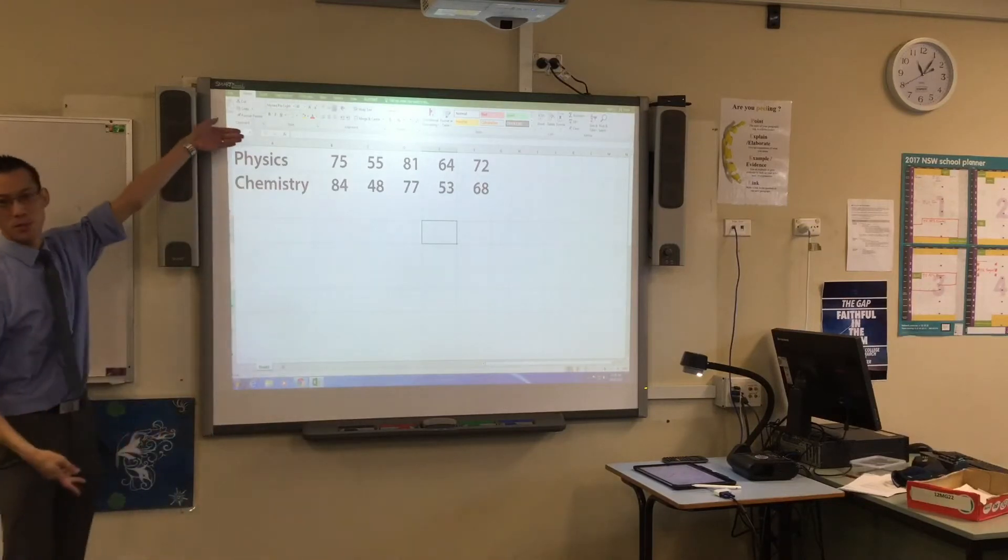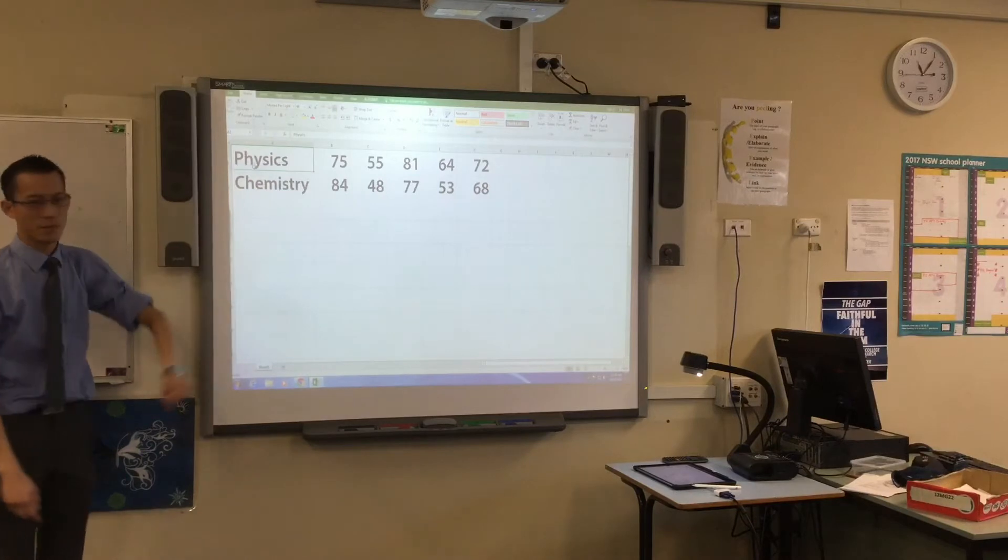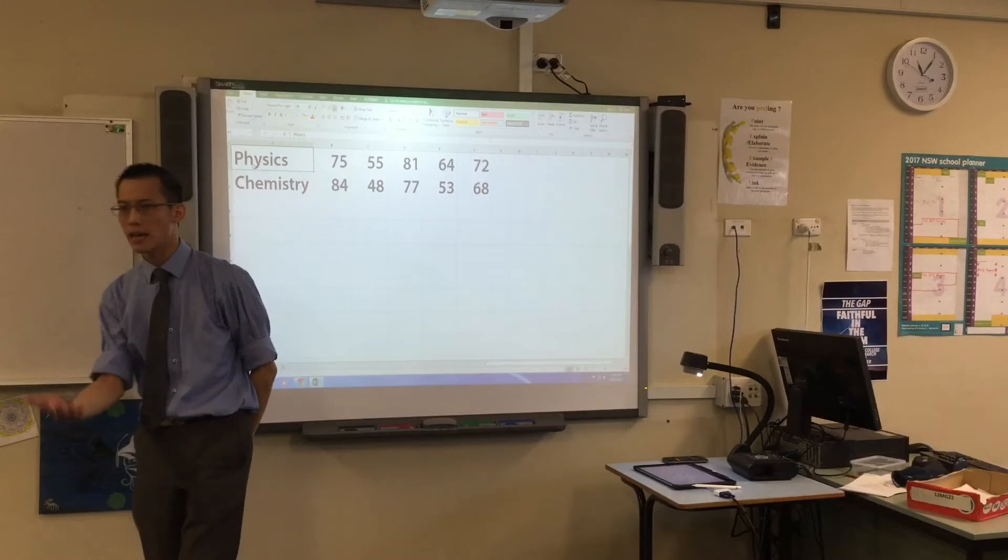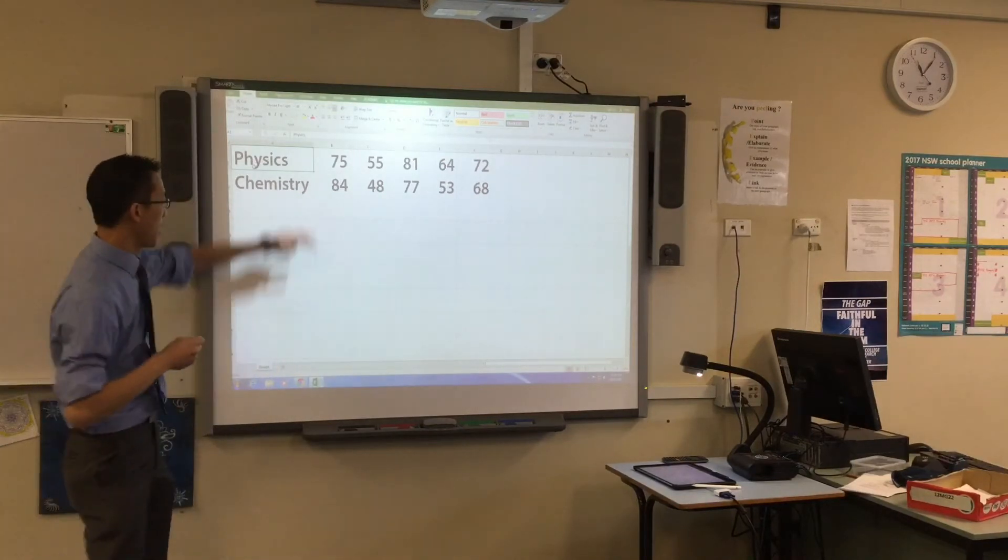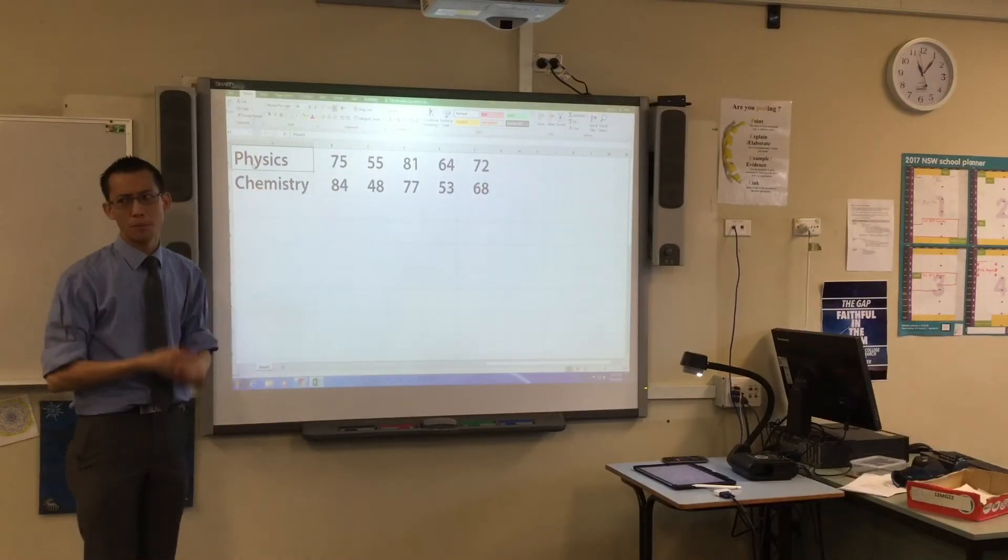One of them is physics, one of them is chemistry. Remember that this represents two variables. What does each column represent? Probably each one represents a single person and they got each of their marks, right?